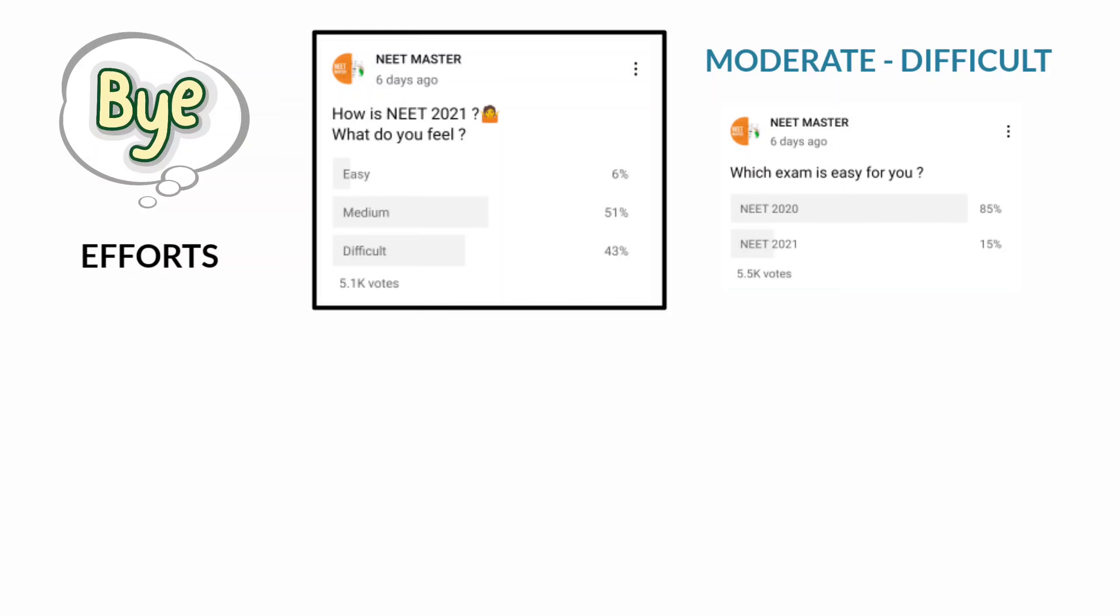Biology is very easy, Chemistry moderate, and Physics is a bit hard and lengthy. I'd like to mention one thing - please don't worry about the exam difficulty because if the question paper is hard, it is not only hard for you but hard for everyone. The student who can manage that will definitely come out with flying colors.